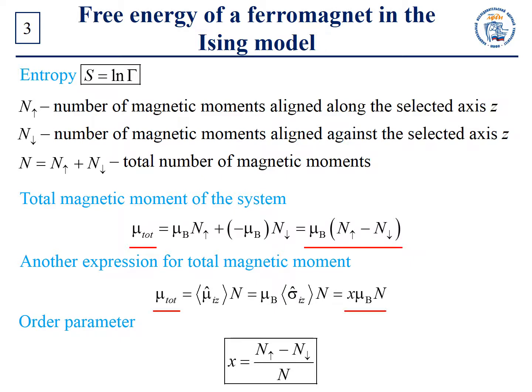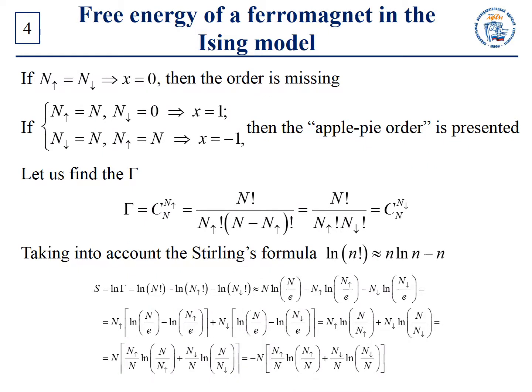Thus, we can rewrite the order parameter in the following form. If N_up is equal to N_down, then the order parameter is equal to zero — therefore the order is missing. On the other hand, if N_up equals the total number of magnetic moments N, and hence N_down equals zero, and vice versa, then complete order is present. Since the order parameter depends on temperature, the difference of N_up and N_down depends on temperature as well.